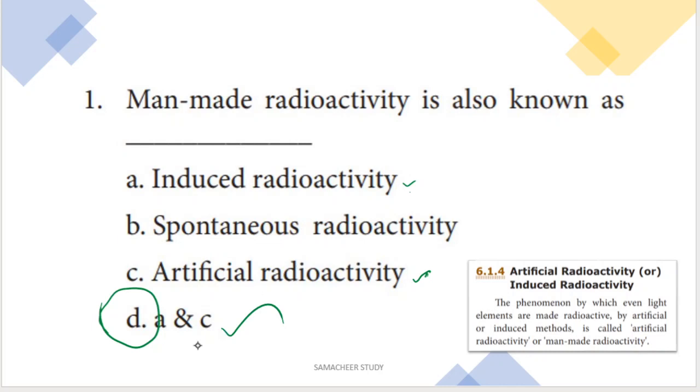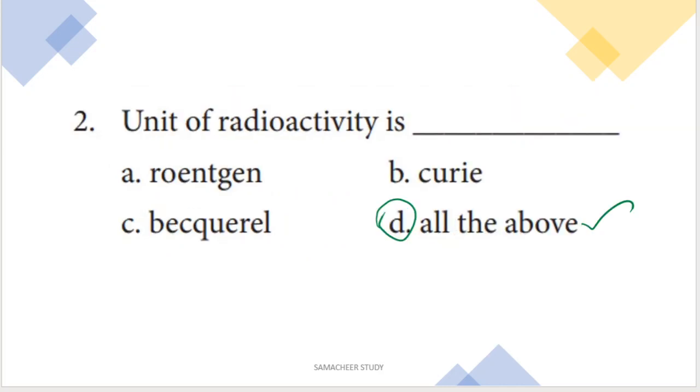In the question, the answer is option A and C. Option A is induced radioactivity and option C is artificial radioactivity. The other options — spontaneous radioactivity and natural radioactivity — are incorrect.